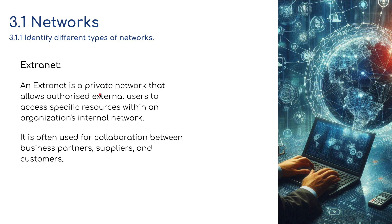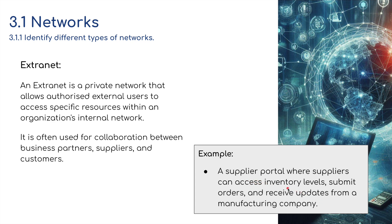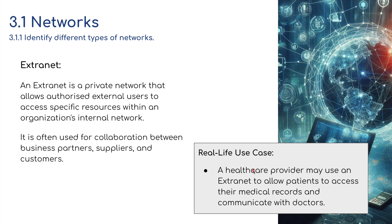The extranet is a private network that allows authorized external users to access specific resources within an organization's internal network. It is often used for collaboration between business partners, suppliers, and customers — providing controlled access to external users, enabling collaboration with external stakeholders, and securing sensitive information. For example, a supplier portal where suppliers can access inventory lists, submit orders, and receive updates from the manufacturing company. A healthcare provider may use the extranet to allow patients to access their medical records and communicate with doctors — accessing those records from anywhere in the world, but only within those specific areas.